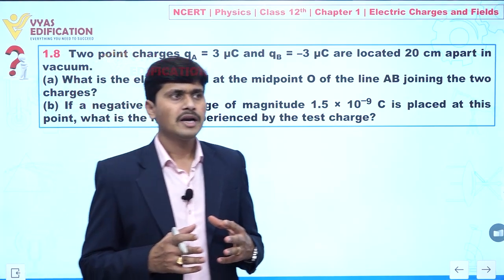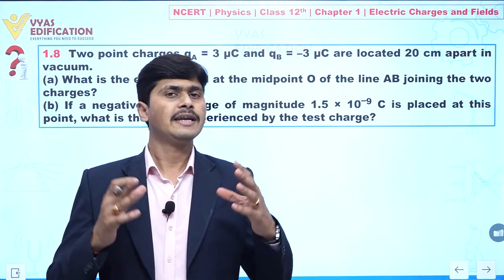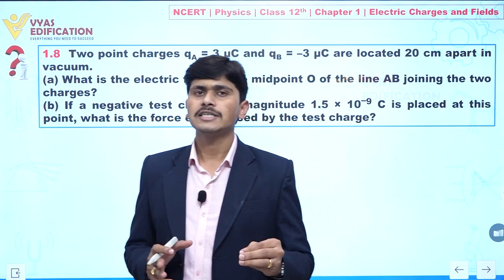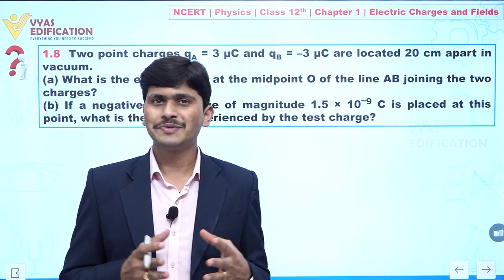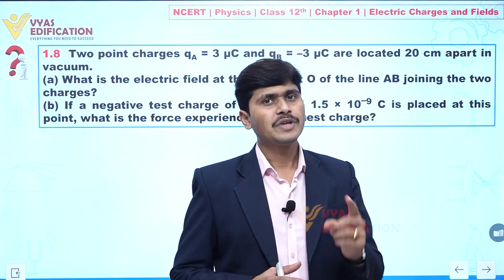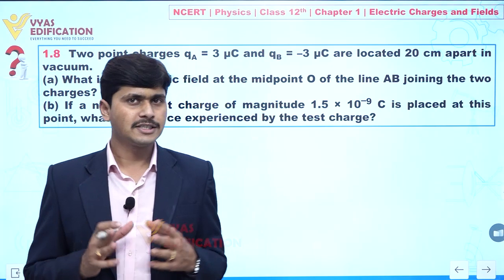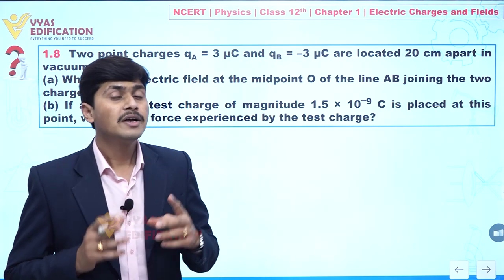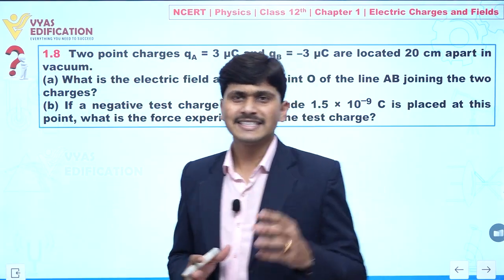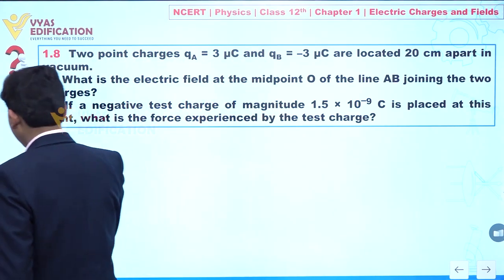Part (b) asks: if we place a negative test charge of magnitude 1.5 × 10⁻⁹ coulomb (1.5 nanocoulomb) at that point, what force will it experience? So our two objectives are: first, find the electric field at the midpoint; second, calculate the force acting on the test charge.